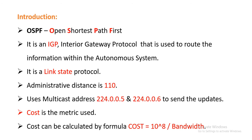OSPF stands for Open Shortest Path First. It is an IGP — an Interior Gateway Protocol — that is used to route information within the autonomous system. Generally there are two types of routing protocol: interior gateway routing protocol and exterior gateway routing protocol. The exterior gateway routing protocol is used to route information between two different autonomous systems, whereas the interior gateway routing protocol routes information within the autonomous system, and OSPF is an interior gateway protocol.